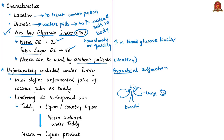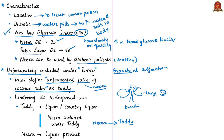Unfortunately, Neera is often included under the definition of toddy — both terms are conflated. The fresh sap (sugary syrup) is what should be called Neera, while toddy is the fermented sap. However, many state laws wrongly define unfermented juice of coconut palm as toddy. This wrong interpretation is similar to interpreting milk as curd — actually toddy is the next product of Neera.